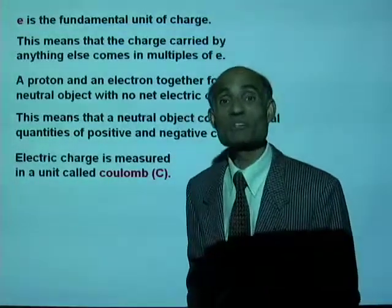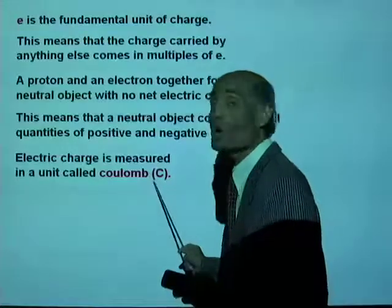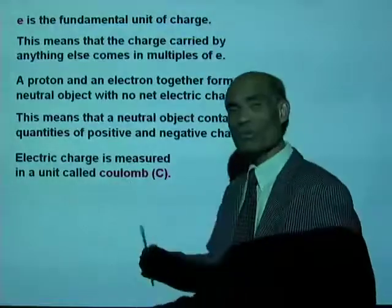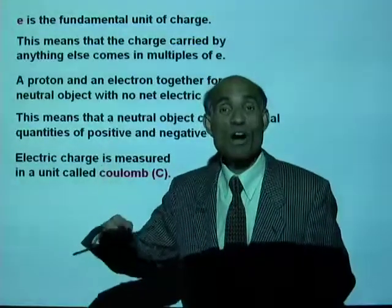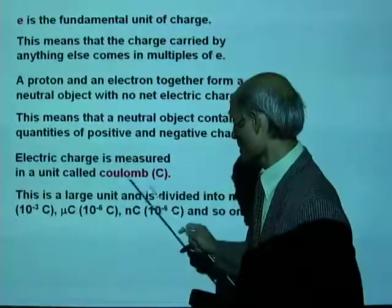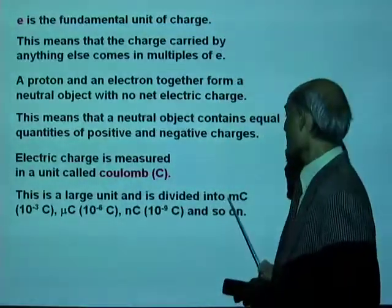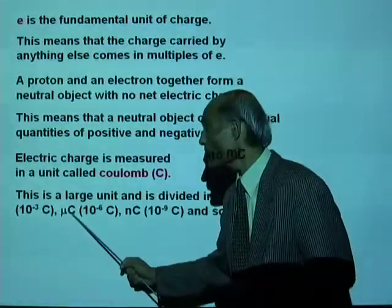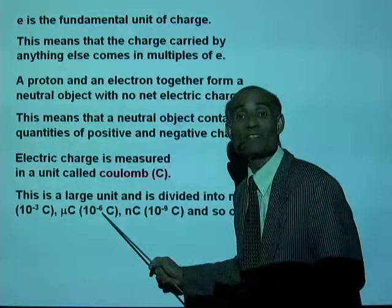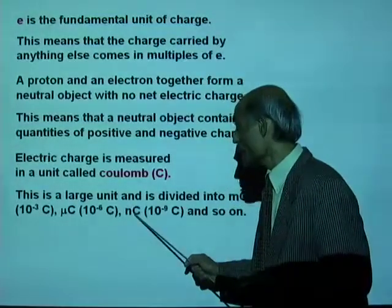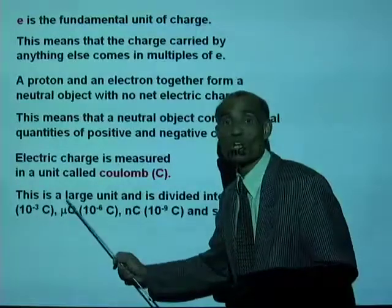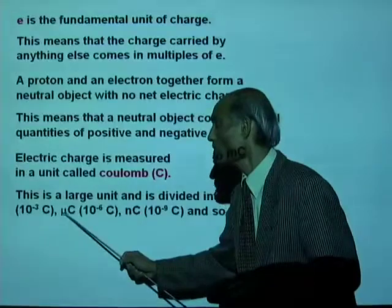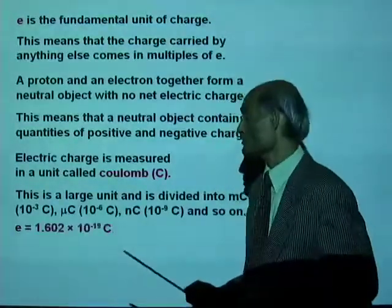Electric charge is measured in a unit called the coulomb, and we will be using it profusely as we go on. One coulomb is actually a very large unit, so we divide it into smaller units: millicoloumb, which is a thousandth of a coulomb; microcoulomb, which is a millionth of a coulomb; nanocoulomb; and so on.